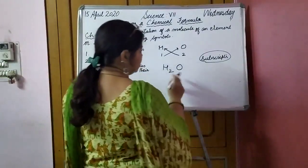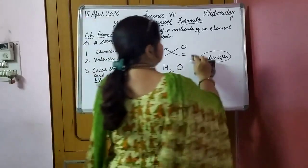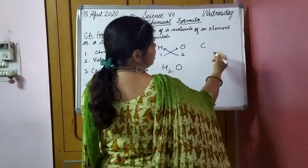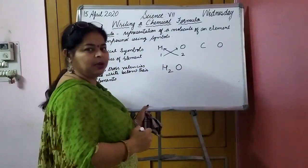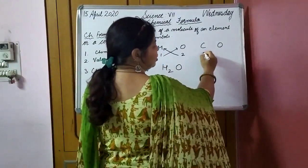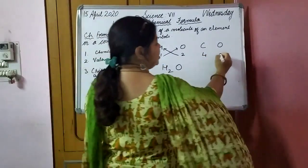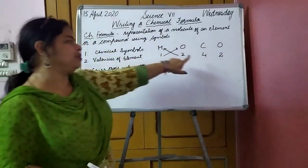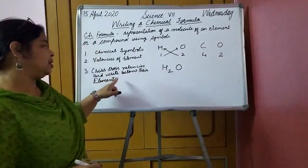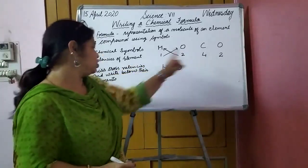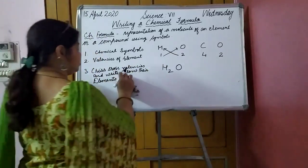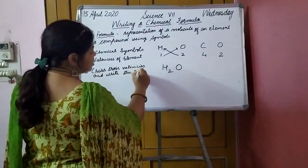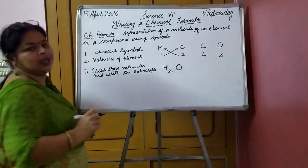Let us take one more example — carbon dioxide. I hope this is clear to everyone. For carbon dioxide, we have carbon and oxygen. Now carbon — the valency of carbon is 4. And the valency of oxygen is 2. So: the first step is chemical symbol, the second step is valencies of the element below their symbols, and the third is you have to criss-cross the valencies and write the subscripts.